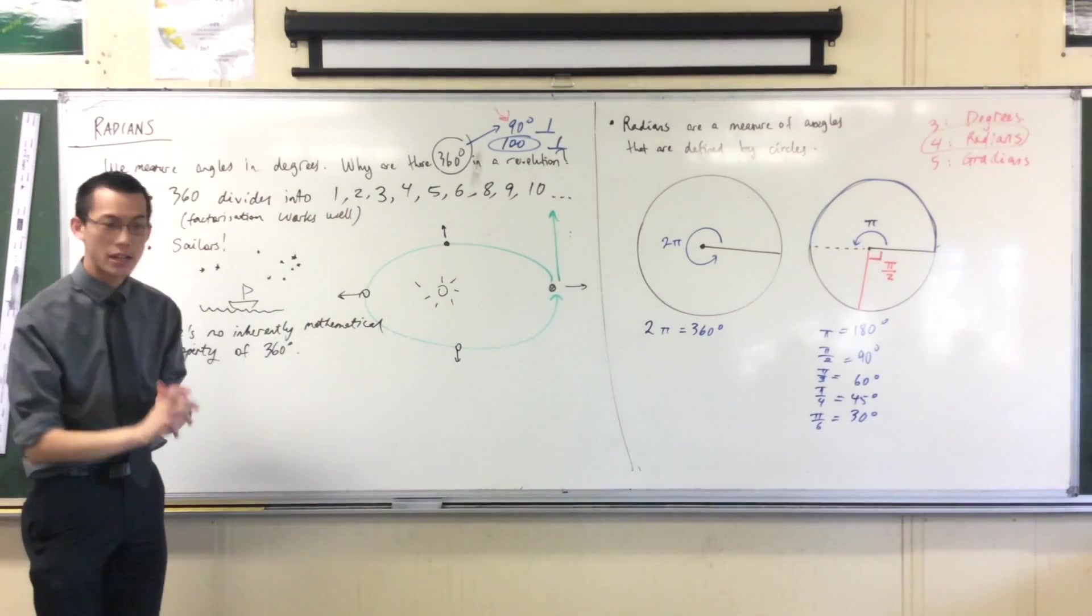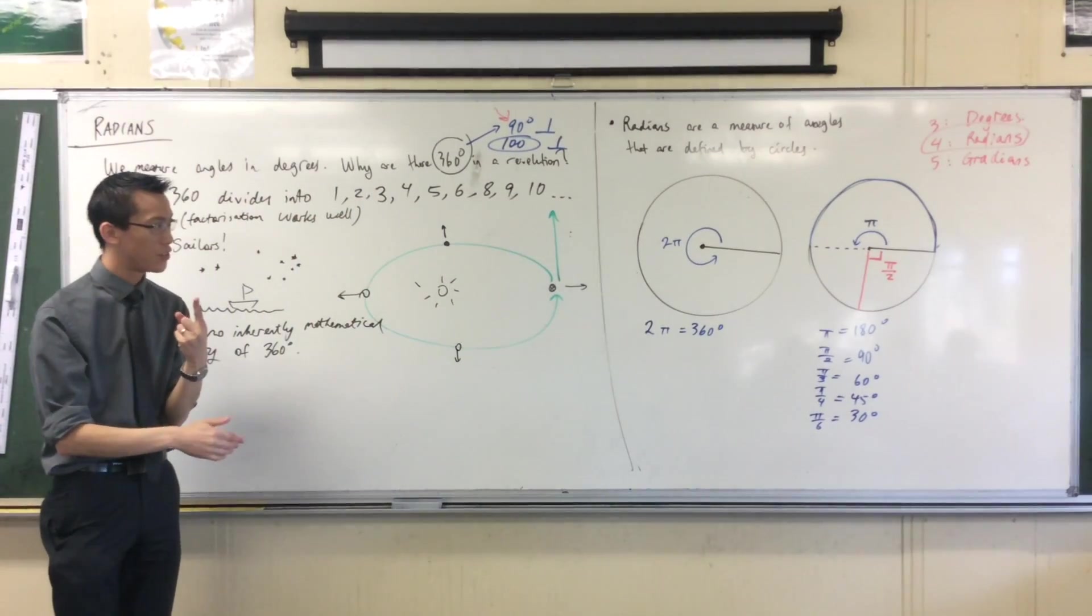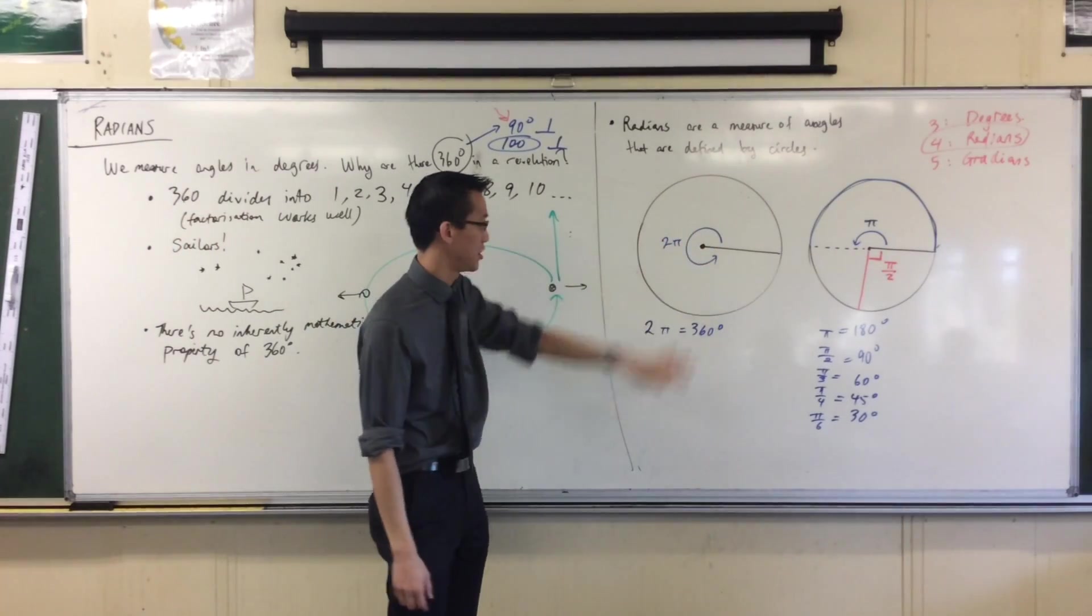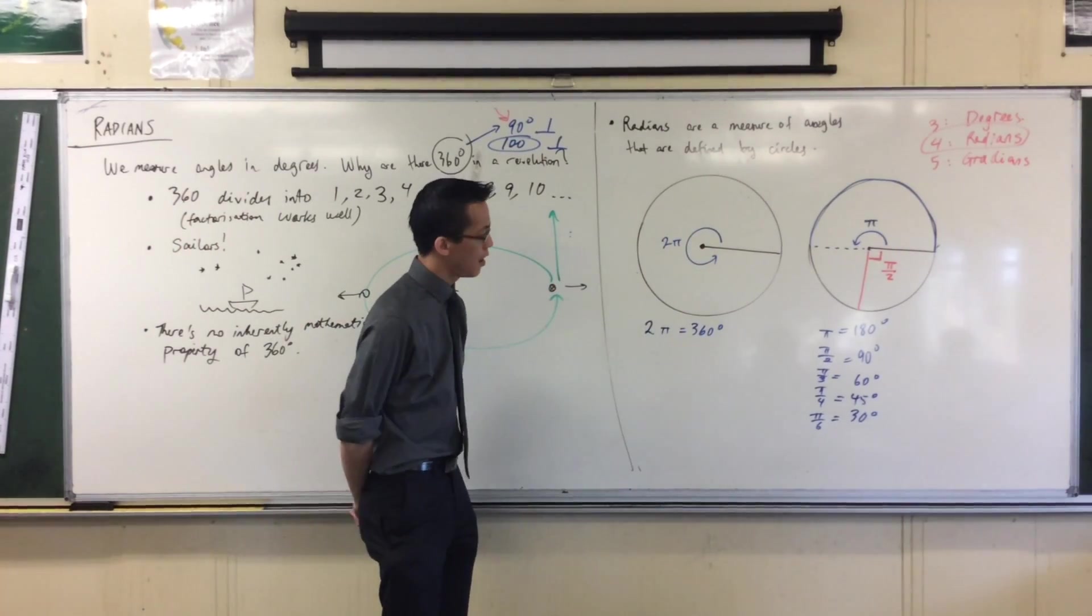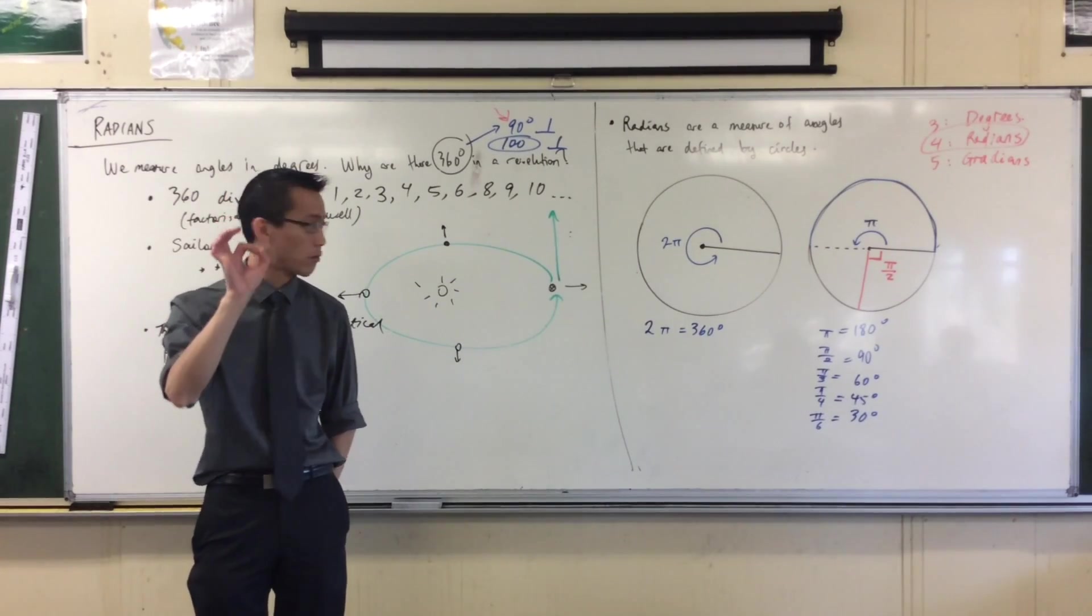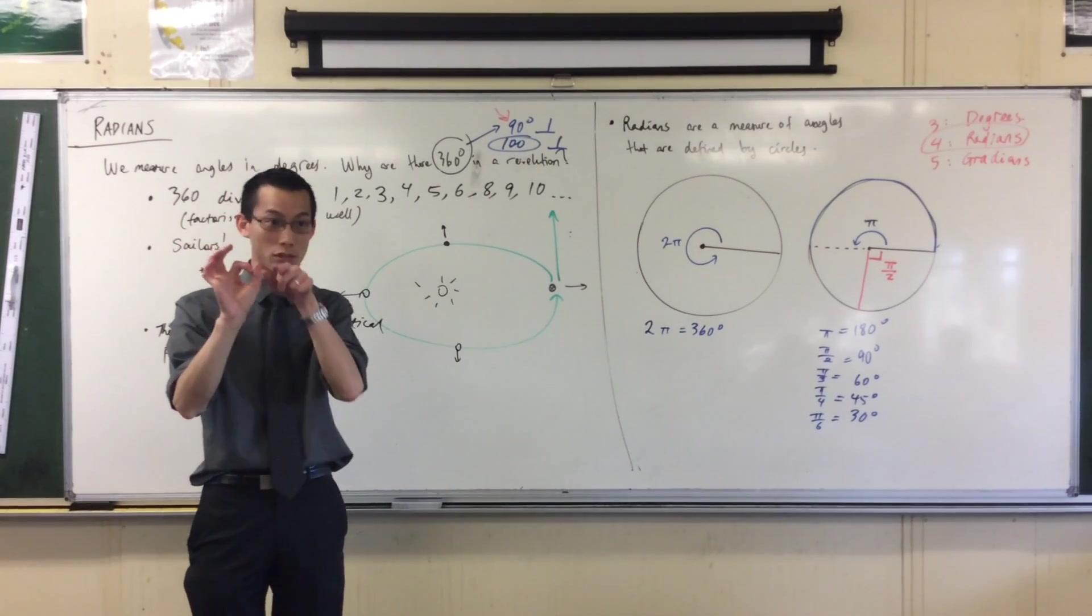A couple of things on notation, which will be explained by a further definition because I actually haven't given you a formal definition yet. I've just shown you pictures. You will notice degrees have a symbol, the circle, because rotation is about circles.